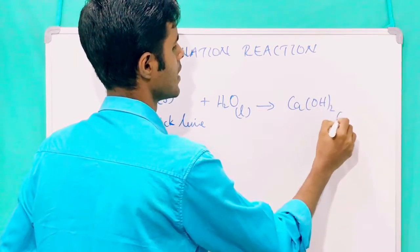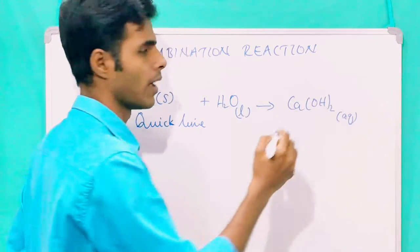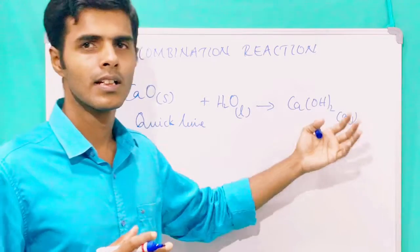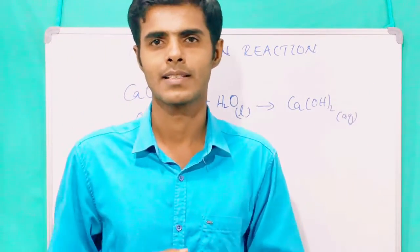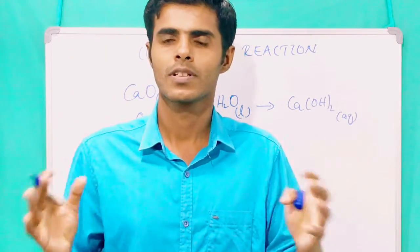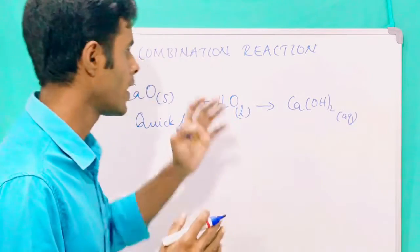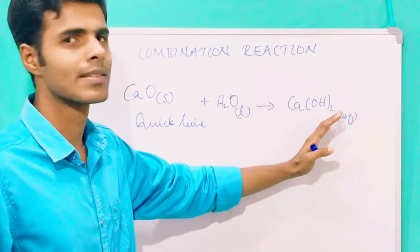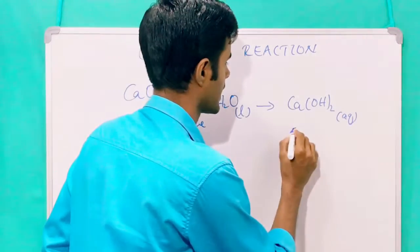Ca(OH)2 which is in aqueous form. Aqueous in the sense calcium hydroxide dissolved in water. We have not separated that water content from the calcium hydroxide. So aqueous calcium hydroxide we are getting. What is happening here? We are adding water to calcium oxide and we are getting calcium hydroxide which is known as slaked lime.